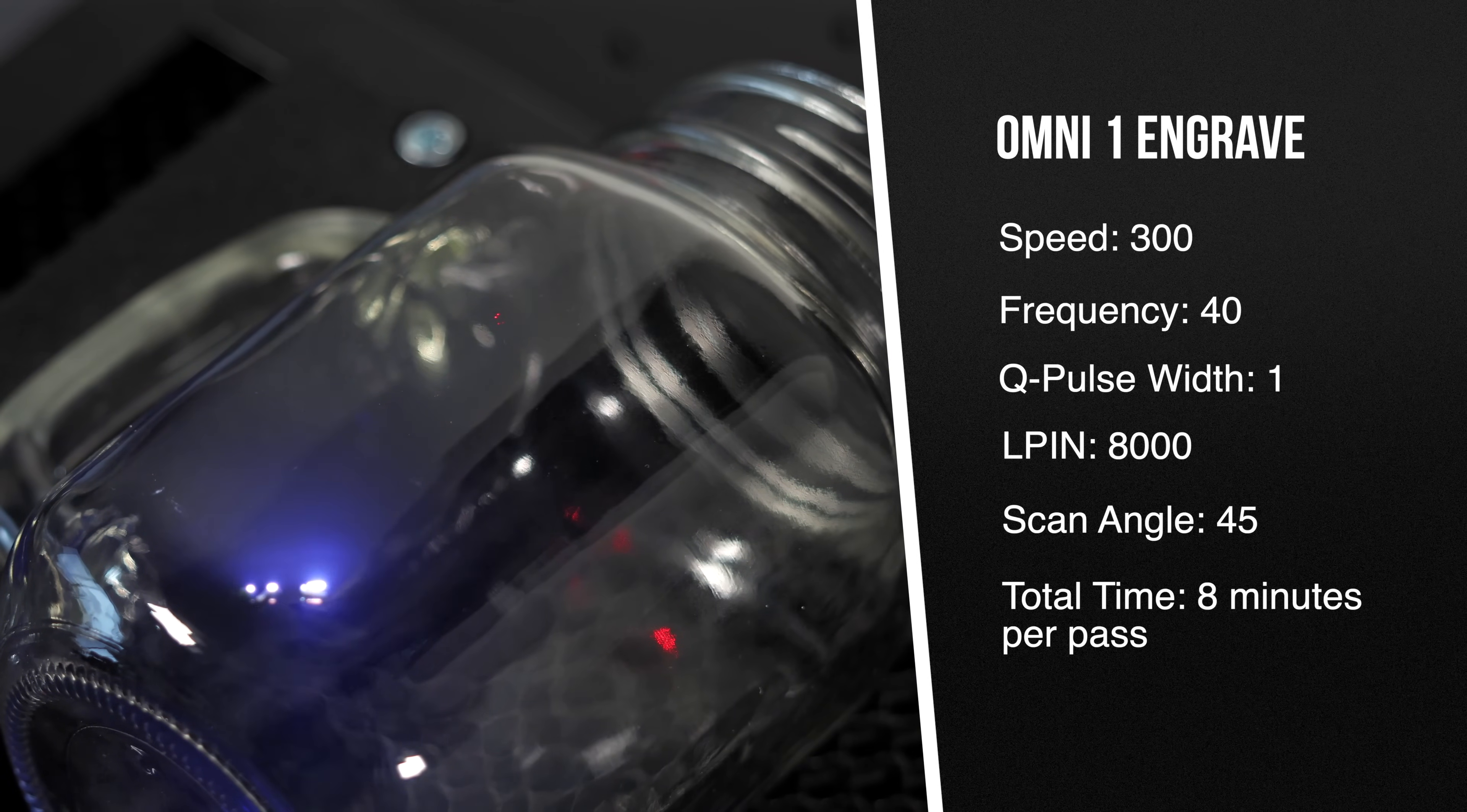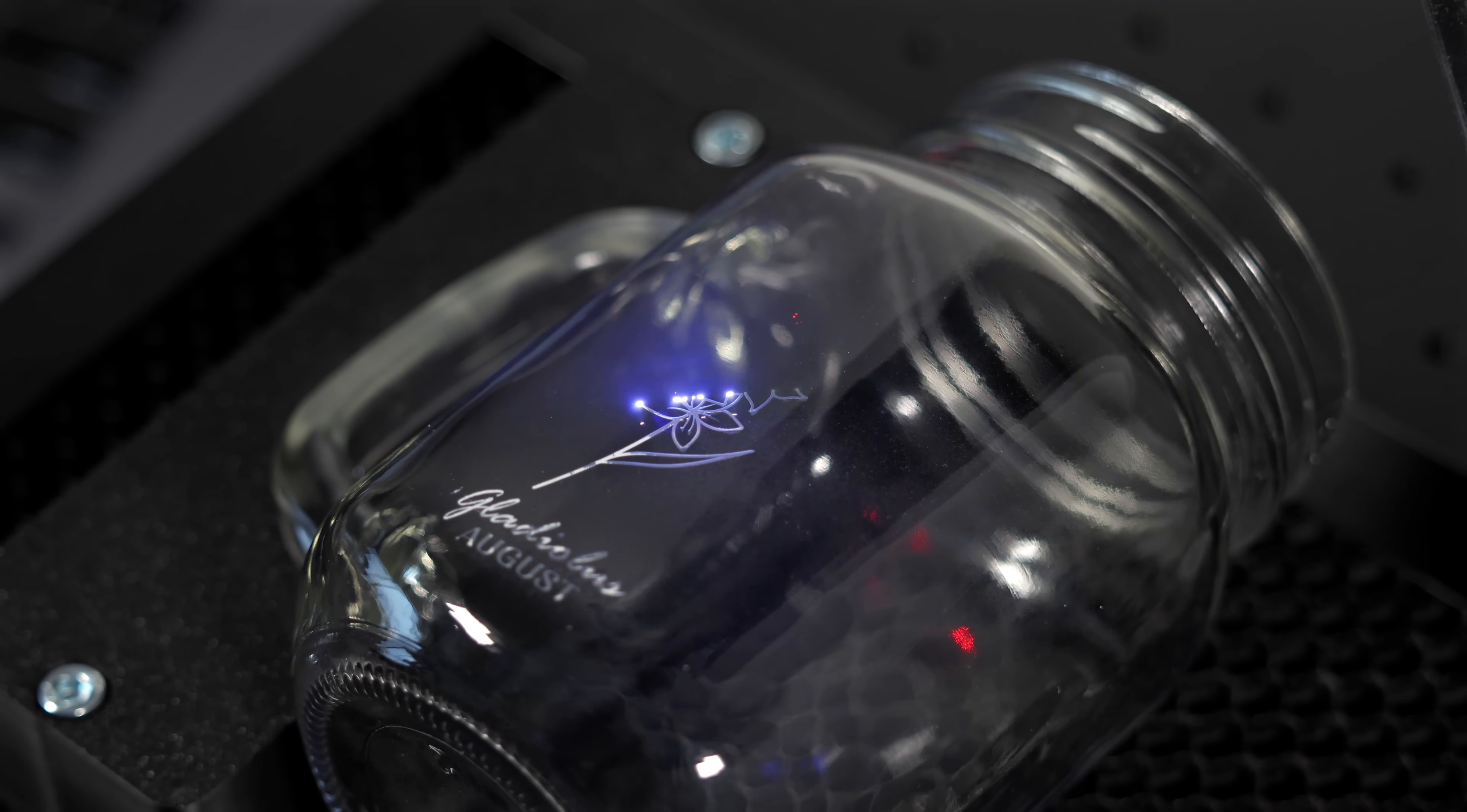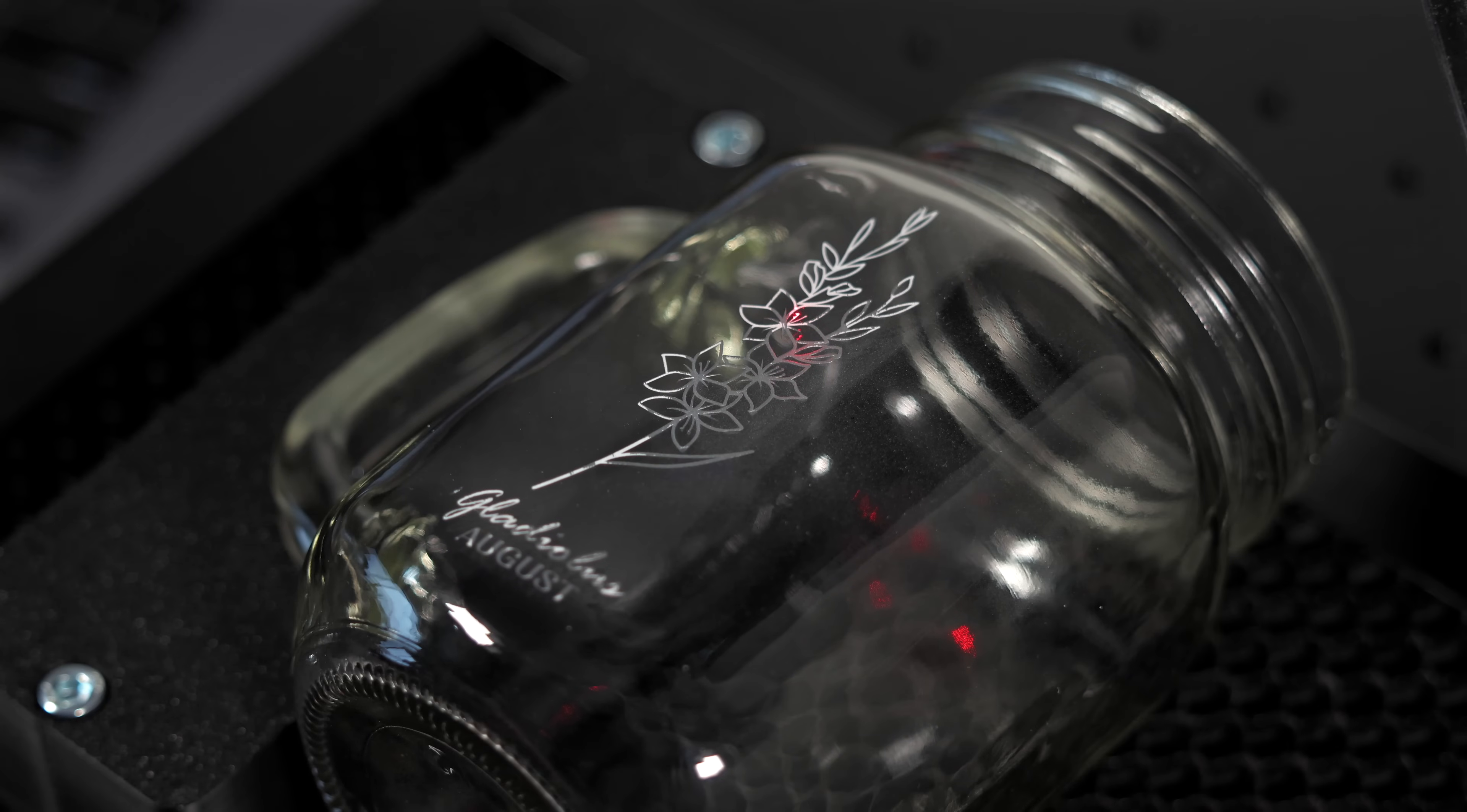During the pass, we noticed that part of the engraving appeared brighter than the rest. We thought that it was because we hadn't leveled the mason jar properly. After running it again, we think it might have actually been an accumulation of glass dust, which could have been wiped away, cutting the total time. Despite that, we're really happy with how the small details turned out, and the overall result is great.